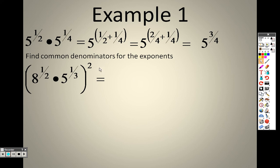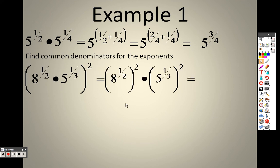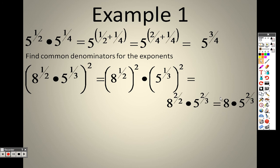I can take the two through to both items and square each one. Two times one-half is two over two, and two times one-third is two over three. So I get 8 to the two over two and 5 to the two over three. Two over two is 1, so that's just 8 to the first power, and I have 5 to the two-thirds left over.